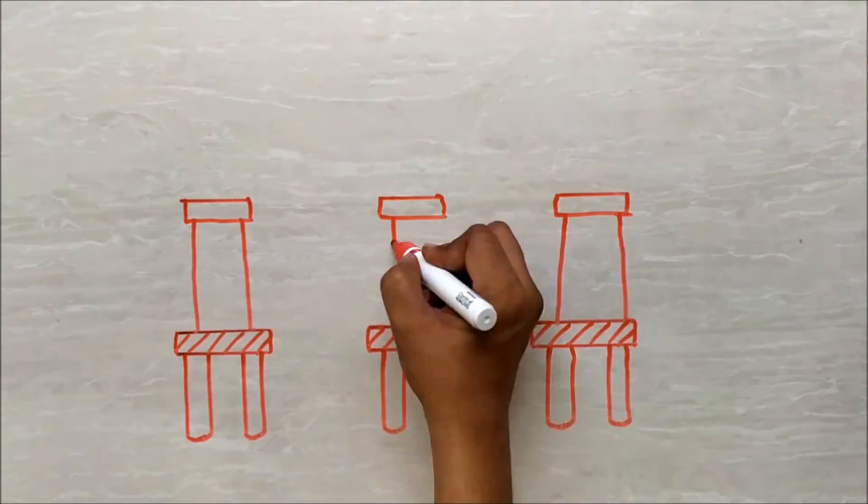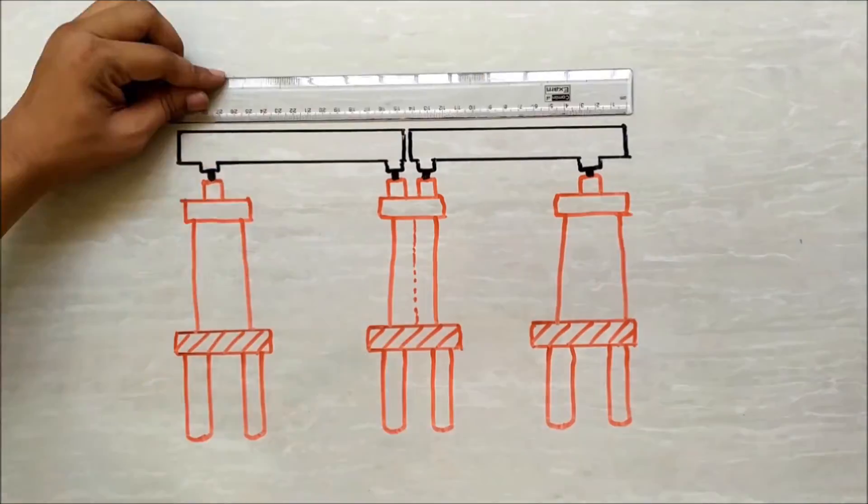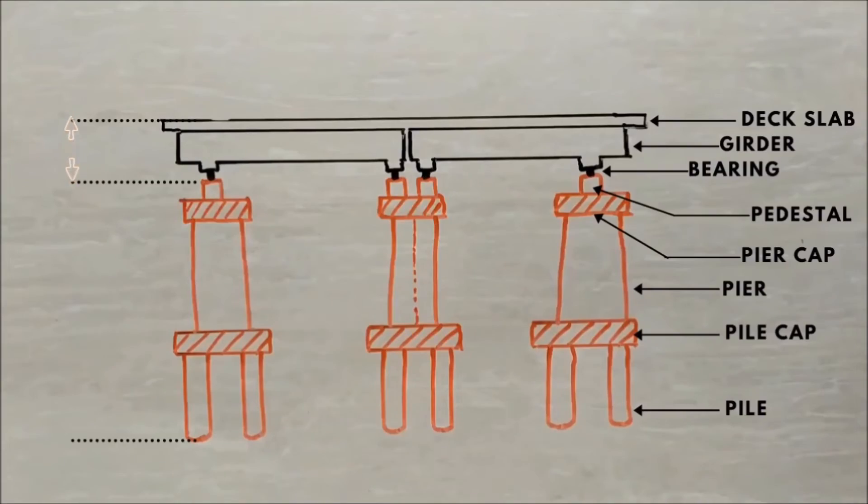A bridge mainly consists of two major parts: superstructure and substructure. The portion of a bridge structure from bearings to the above is called the superstructure, and below bearings it is called the substructure.